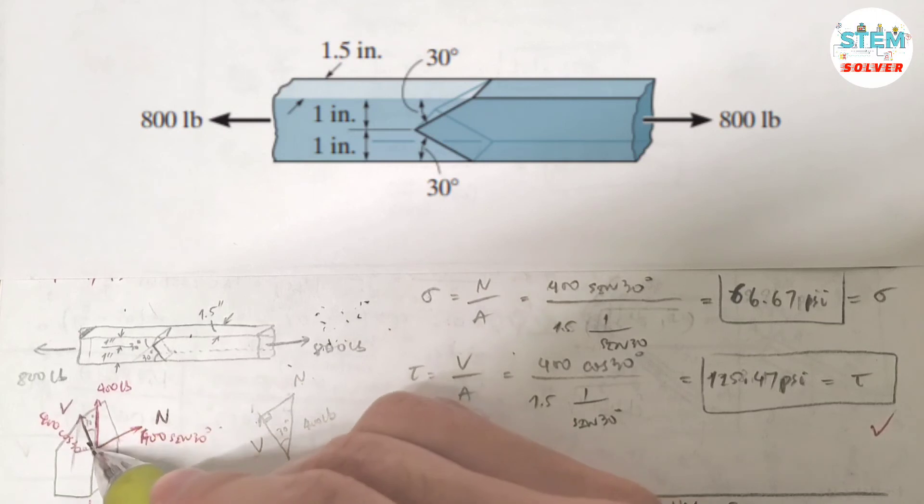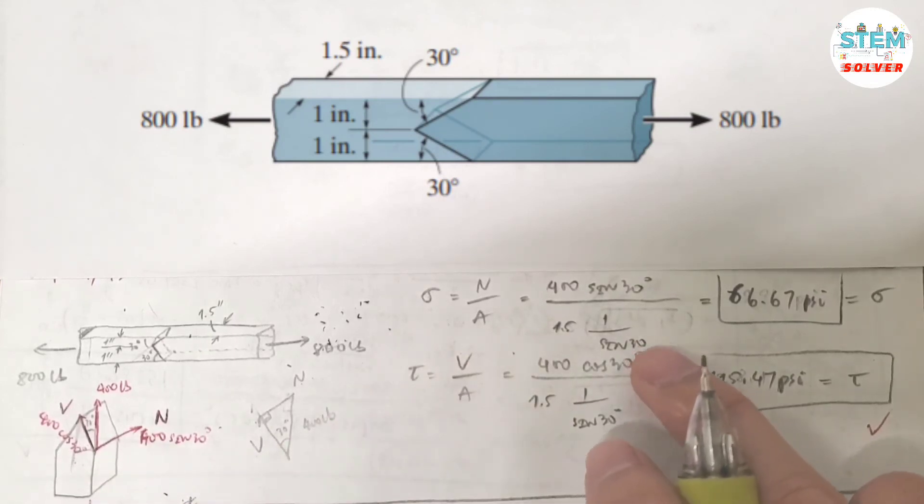You know that this angle is 30 degrees, and the distance from here to here is 1 inch. So this length is equal to 1 over sine 30. That gives me the area. Punch this into the calculator, and you will get 66.67 psi. That is the normal stress.